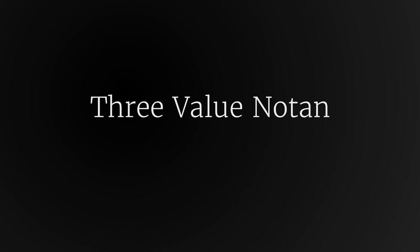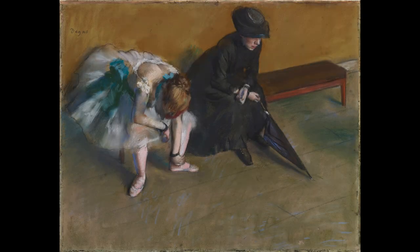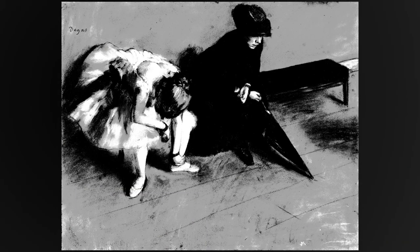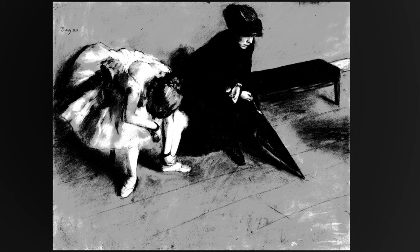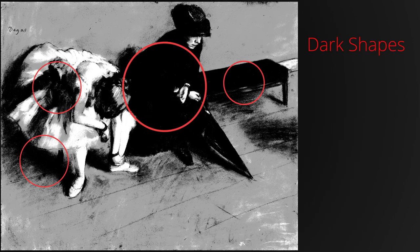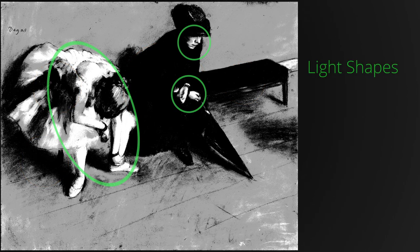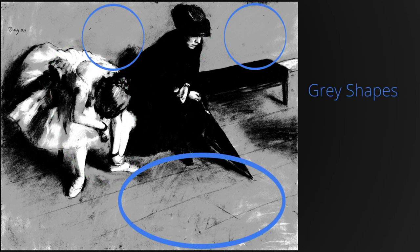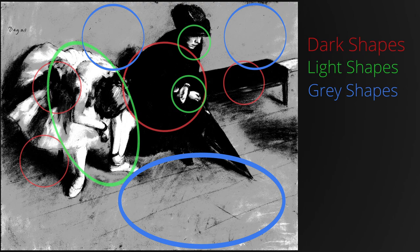The second most common type of notan structure is the three-value notan structure. This structure is the basis of many beautiful paintings, such as this painting by Degas. If we convert this painting to black and white, you can see the three values: we have a dark value, a series of light value shapes, and some gray shapes.